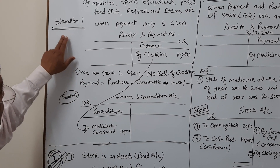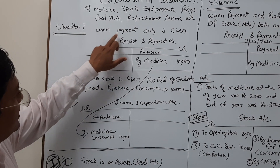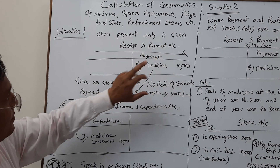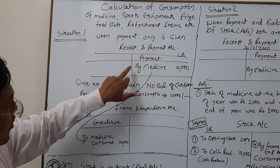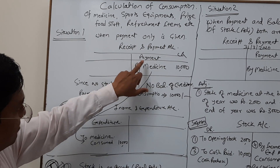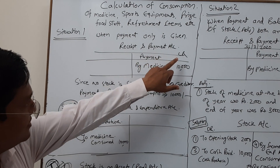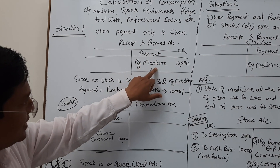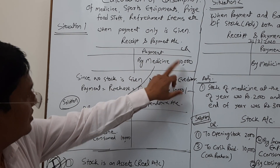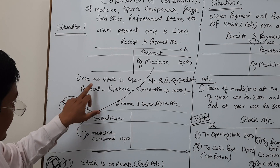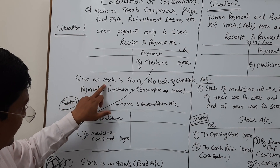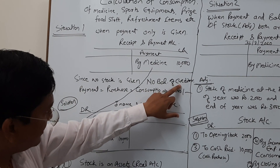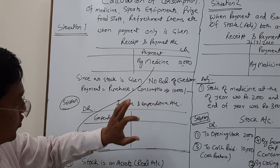Once again, situation one: when only payment is given on the payment side, that is the credit side of the receipt and payment account — it is directly recorded as an expense.